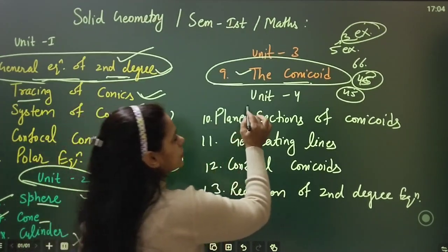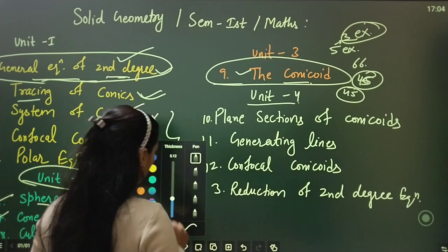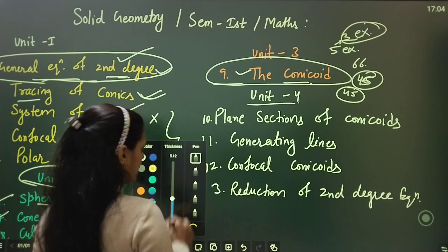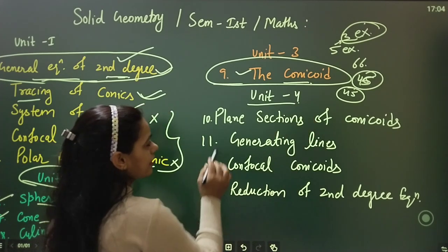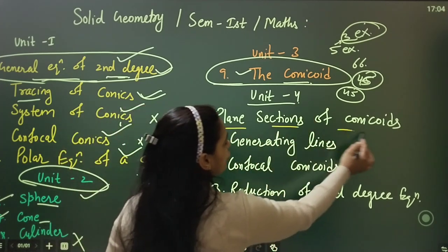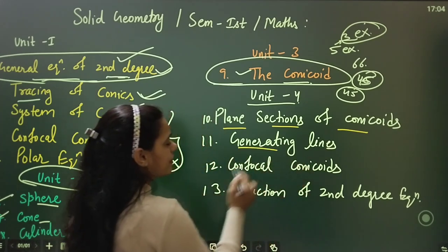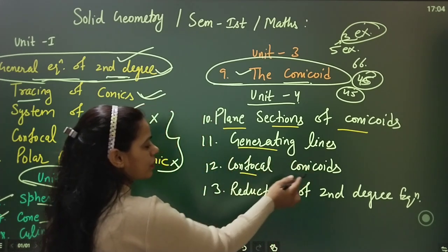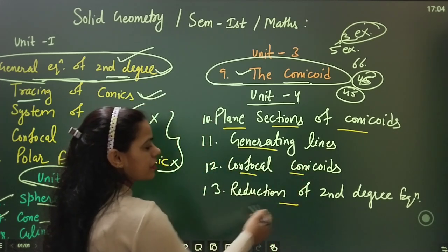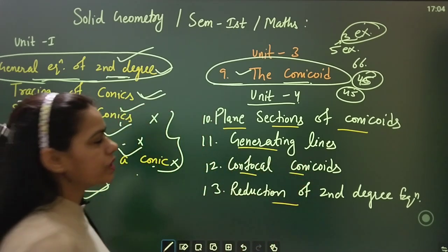If we talk about unit 4, what will you do? It covers: plane section of conicoids, generating lines, confocal conicoids, and reduction of second degree equation.